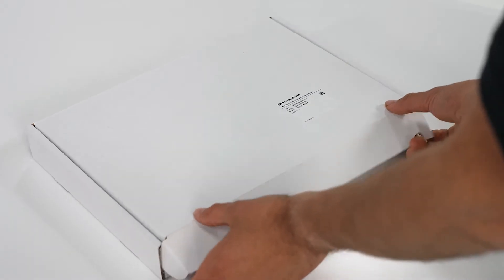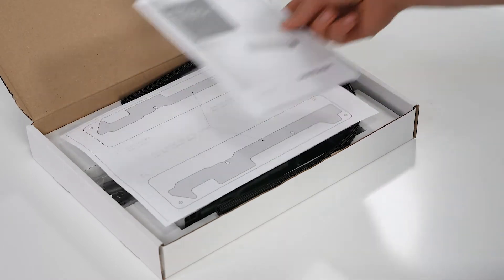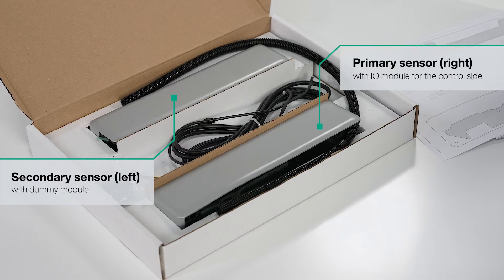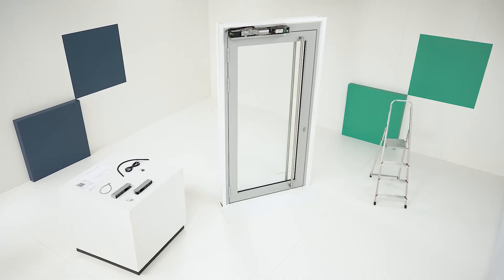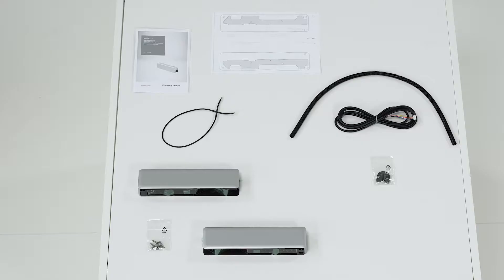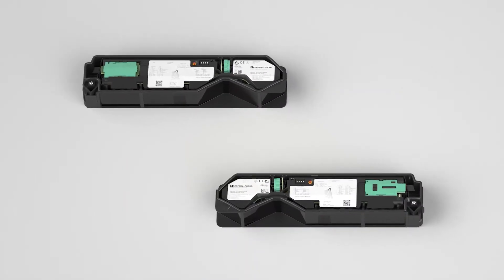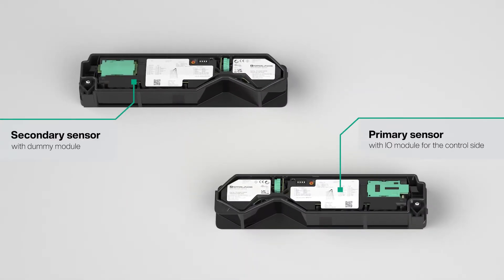All of the components required for installing and commissioning the shield scan are included in the scope of delivery. On delivery, the I.O. module is connected to the right-hand sensor. The primary and secondary sensors are assigned by connecting the I.O. module to the sensor that will act as the primary sensor. The conditions at the installation site determine which sensor should be assigned the primary role. Ideally, the I.O. module should be installed on the control side.